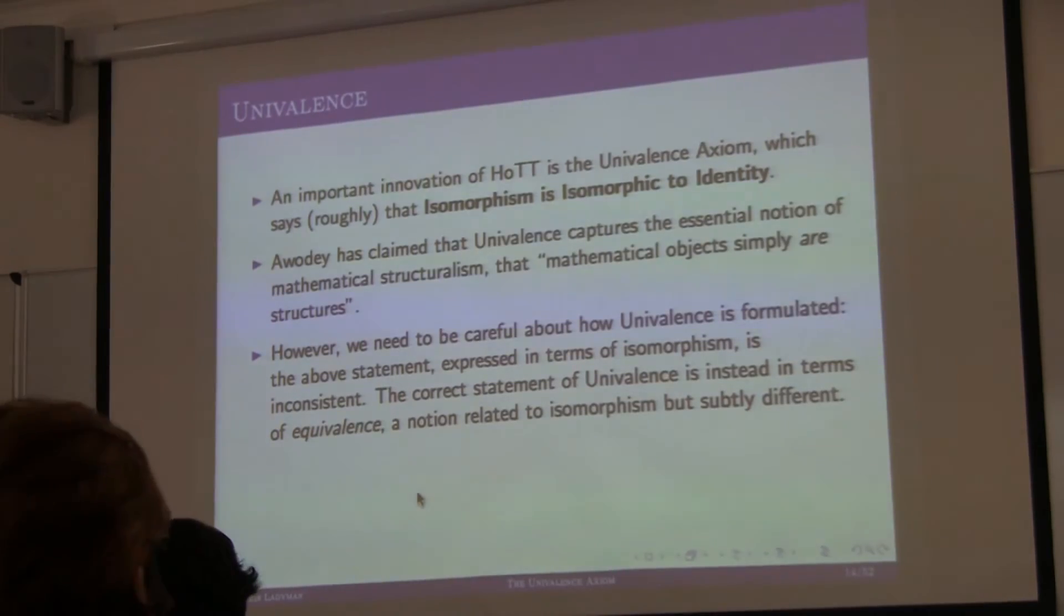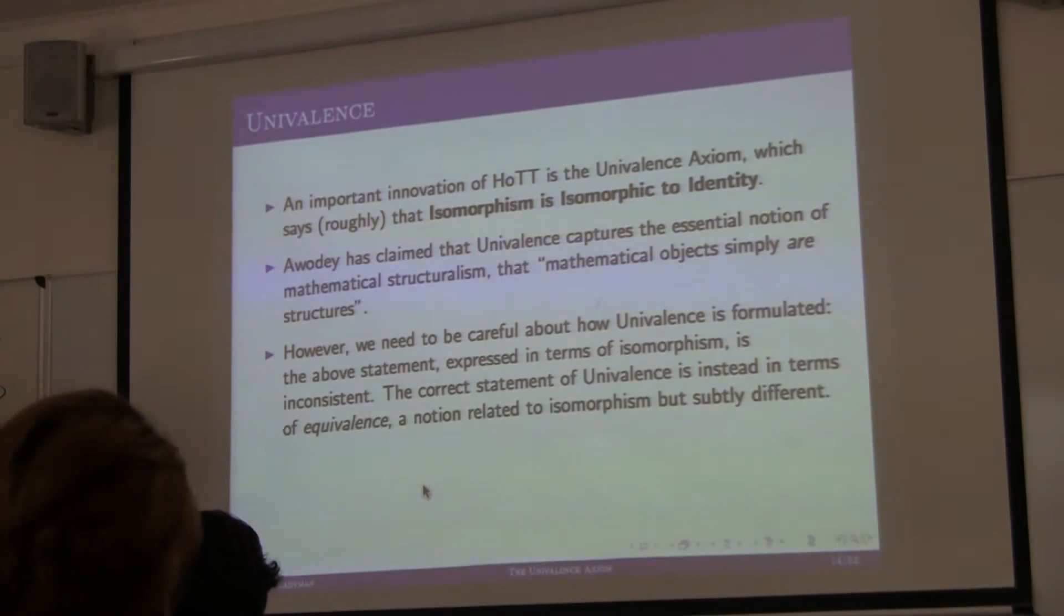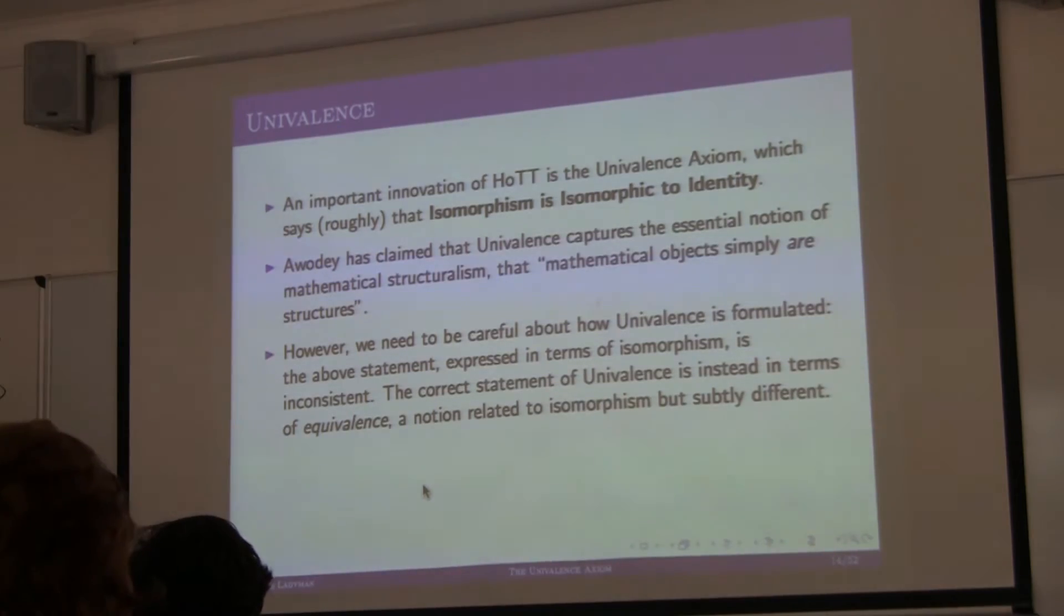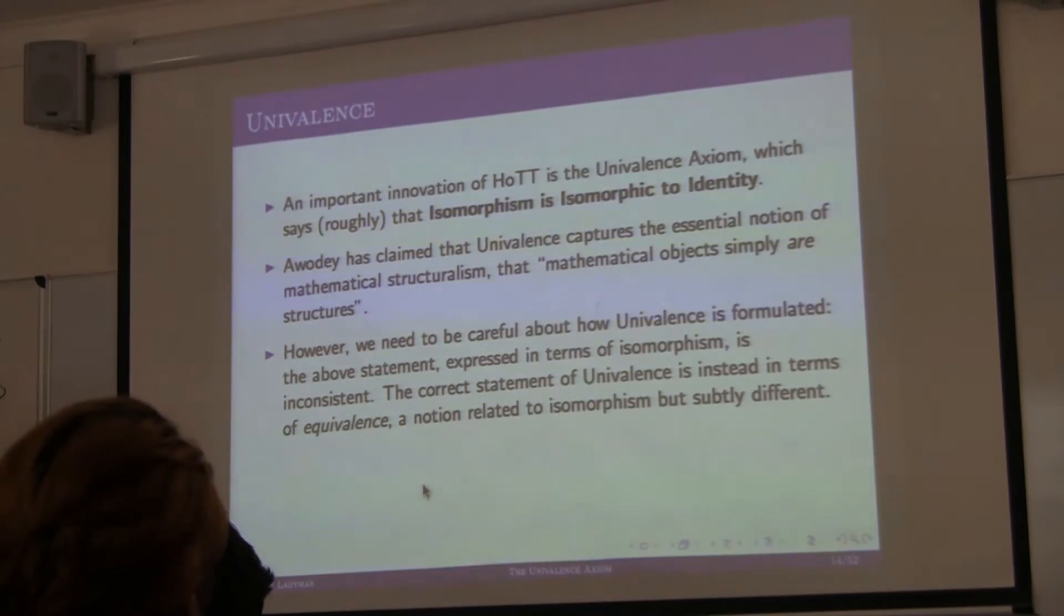And the idea is something like, mathematical objects simply are structures, the criterion of identity for structures is isomorphism, so we should adopt univalence because then the criterion of isomorphism is sort of promoted to identity. But that's a bit misleading. Because actually, if you formulate univalence in terms of isomorphism as standardly defined, what you get is inconsistent, which is bad. So, in fact, the correct notion of the correct ingredient into univalence is equivalence, not isomorphism. Where equivalence has multiple, can be defined in multiple equivalent ways. But the definition I'll give you is just this, that an isomorphism is when you have, so if you've got A and B, they're isomorphic if there's a function between them that has an inverse. And, sorry, a pre- and post-inverse. And the pre- and post-inverses are the same. Whereas the equivalence, you need the weaker requirement, that there is a pre-inverse and there is a post-inverse, but they needn't be the same.